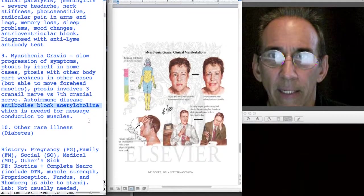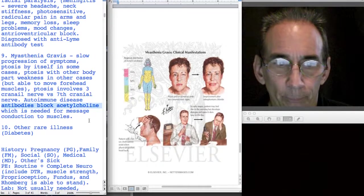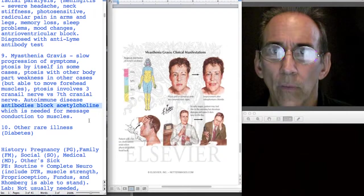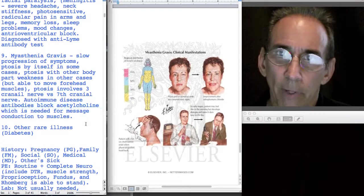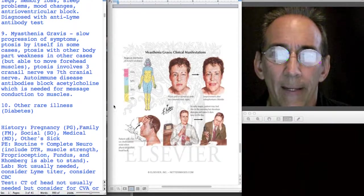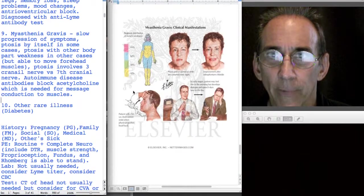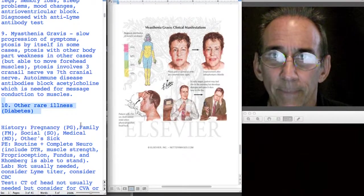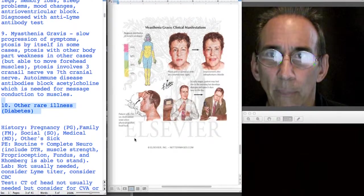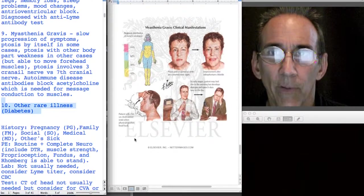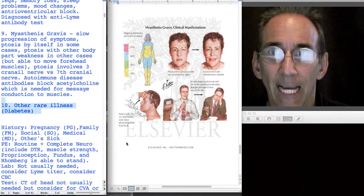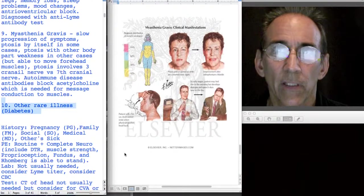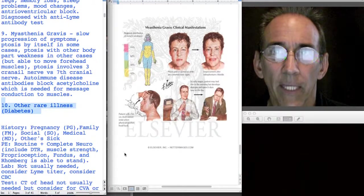So those are the nine possible reasons for facial droop. I have to say there's always a possibility of something else. Some literature says it could be diabetes. I've never seen anybody with facial droop as a result of diabetes, but it doesn't mean it hasn't happened or couldn't happen because diabetes does affect the nerves.